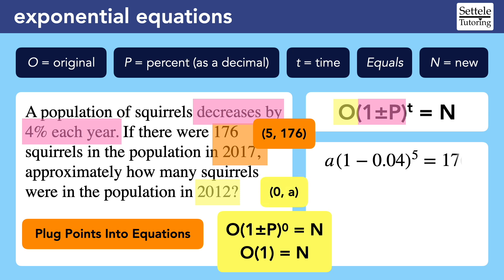We can also plug in 5, 176 for the t and N. Now we have an equation with just one variable, which we can solve. First, simplify the parentheses, then raise it to the fifth power, then divide both sides by 0.815 to get that a, our original value for 2012, is 215.9. But remember that this is a story about squirrels, and you can't have 9 tenths of a squirrel, so we should round up to 216.